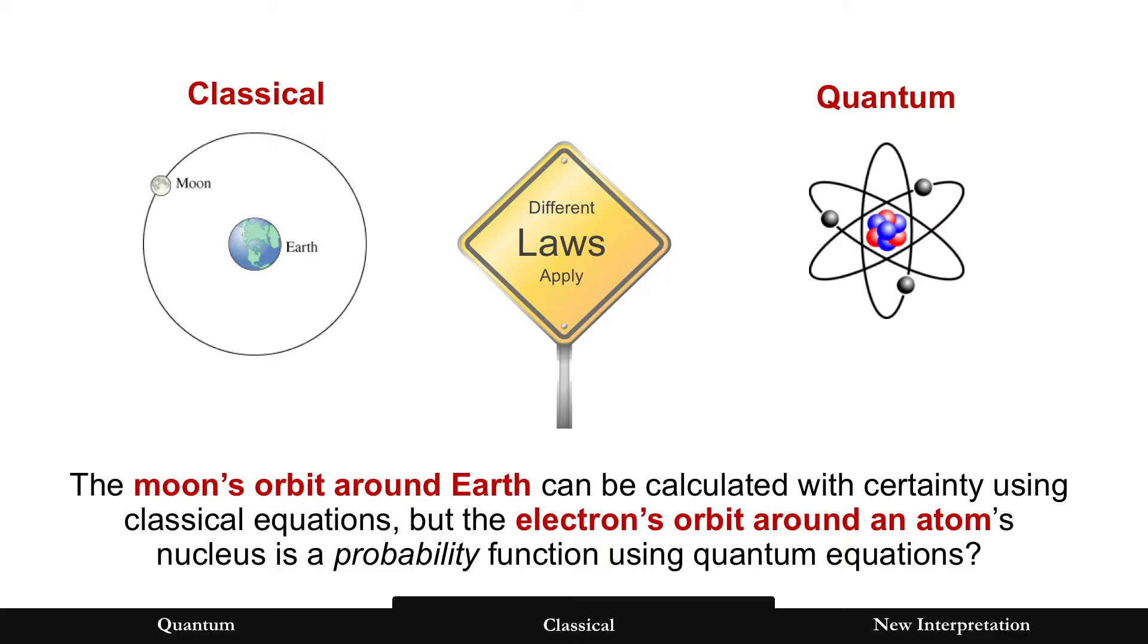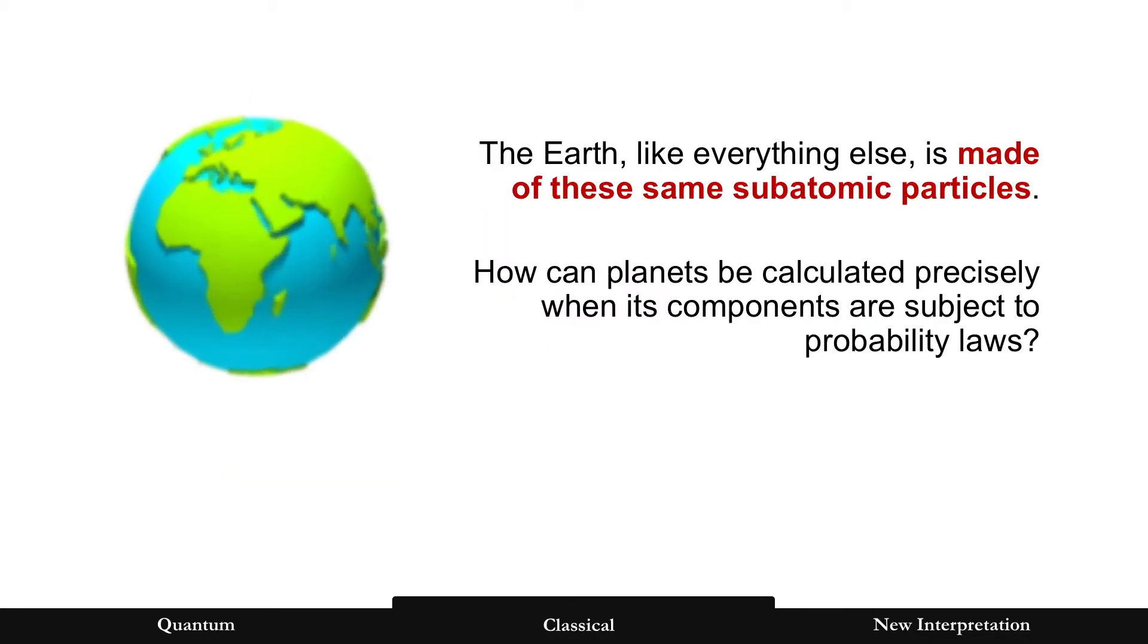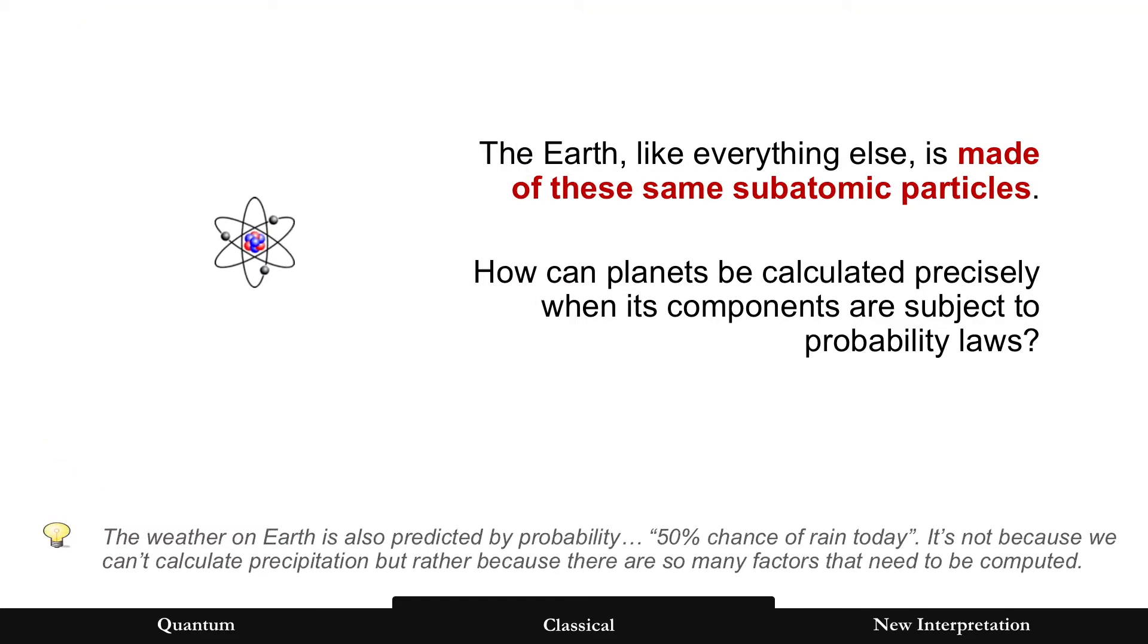But yet quantum physics, quantum mechanics has a very different set of laws. And it's the probability of the electron being somewhere around the atom. Why are there different laws? Especially considering that the earth, like everything else around us, everything is made of these same subatomic particles. So how can planets be calculated precisely when its components are subject to probability laws?